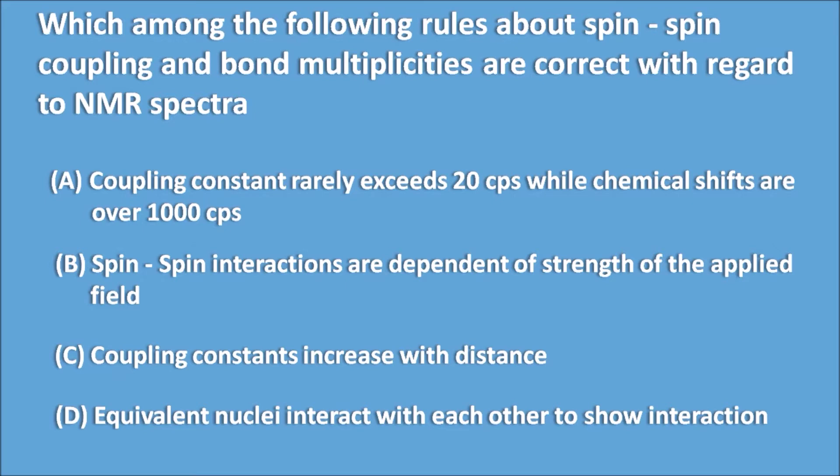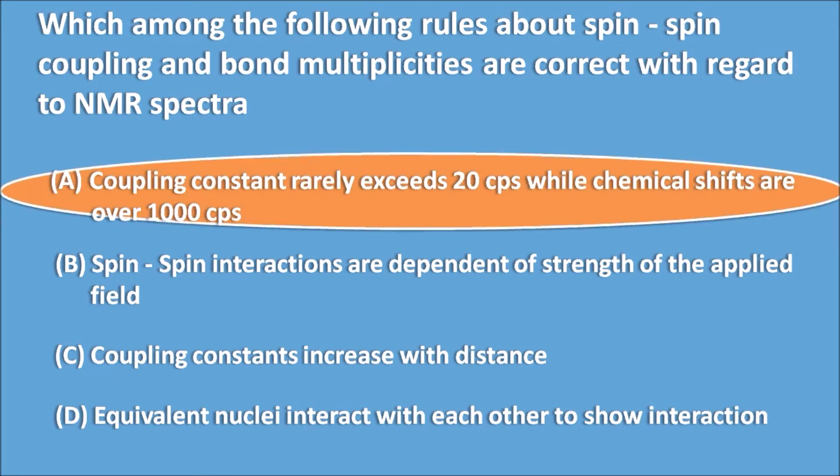The right answer is: coupling constants rarely exceed 20 CPS while chemical shifts are over 1000 CPS. In comparison, the chemical shift coupling constant is very very less.